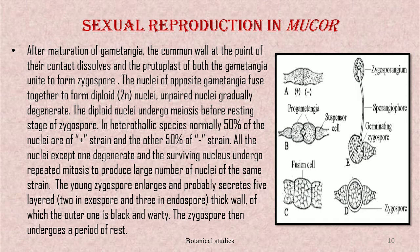After maturation of the gametangia, the common wall at the point of contact dissolves and the protoplasts of both gametangia unite to form a zygospore. The nuclei of opposite gametangia fuse to form diploid nuclei; unpaired nuclei gradually degenerate. The diploid nuclei undergo meiosis before the resting stage of the zygospore. In heterothallic species, normally 50% of nuclei are of the plus strain and the other 50% are of the minus strain.